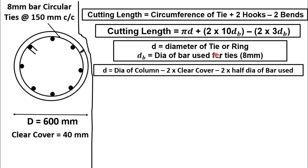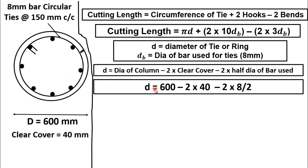Now we will calculate the diameter of tie or ring. The diameter of tie or ring d is equal to diameter of column minus two times the clear cover minus two times half diameter of bar used. So putting values in this equation, we will get diameter of tie or ring is 600 mm which is the diameter of column minus two times cover.